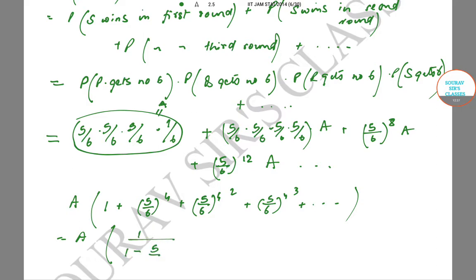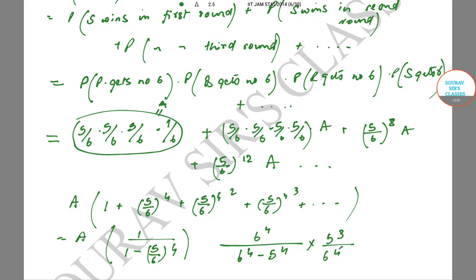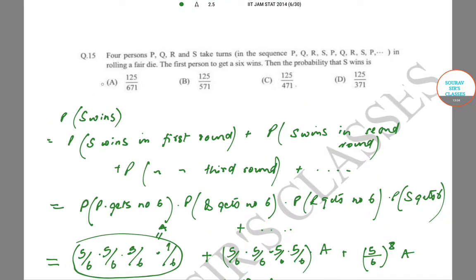Evaluating: A = (5/6)³ × (1/6) = 125/1296. The geometric series sum gives 1/(1 − 5⁴/6⁴) = 6⁴/(6⁴ − 5⁴). So the probability = 125/1296 × 1296/671 = 125/671. This equals option A, which is our correct answer. For any queries, please post in the comment section. If you like the video, press like and subscribe for more videos.